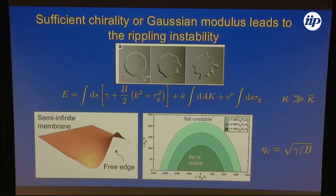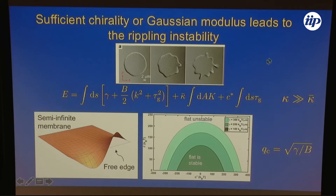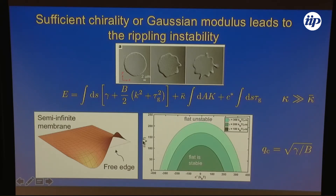I'm looking at the fluctuation of the edge and a linear stability analysis of the straight edge. I'm treating it as if the twist penetration depth is very short, so I'm going to use this effective theory. There's a penalty for making the edge longer — the line tension — and a penalty for bending it or giving it some geodesic torsion. But the Gaussian curvature modulus, which is negative, would like to have this shape, and also the twisting. The wavelength that first goes unstable is set by the square root of the line tension divided by the bending stiffness — not the twist penetration depth. As you increase the line tension γ, it becomes harder and harder to make the system go unstable, either by increasing C*, the chirality, or by increasing the Gaussian curvature modulus.